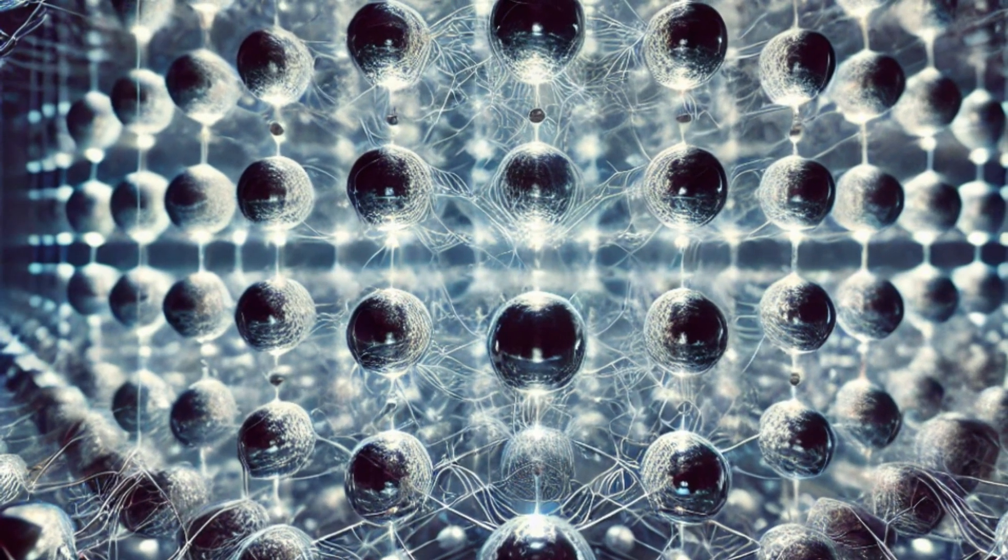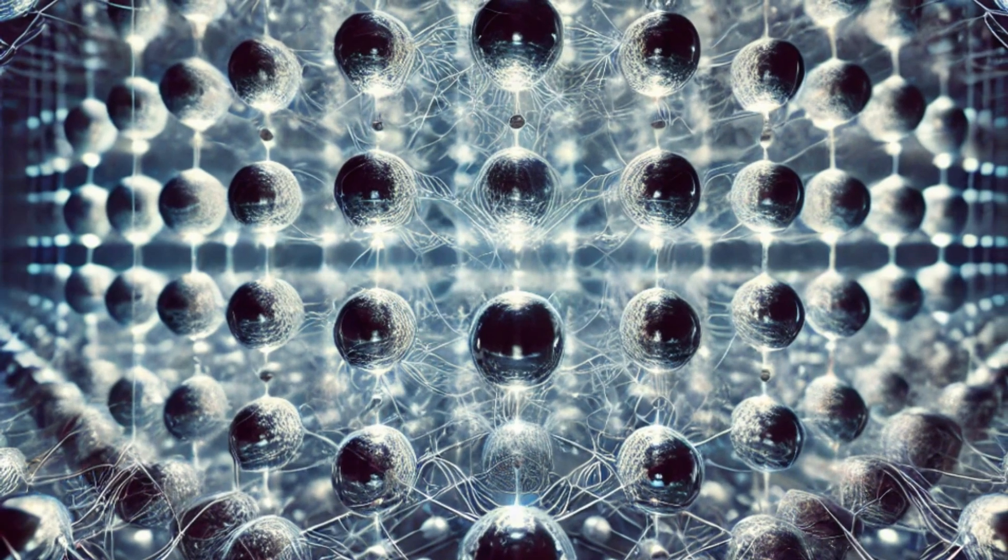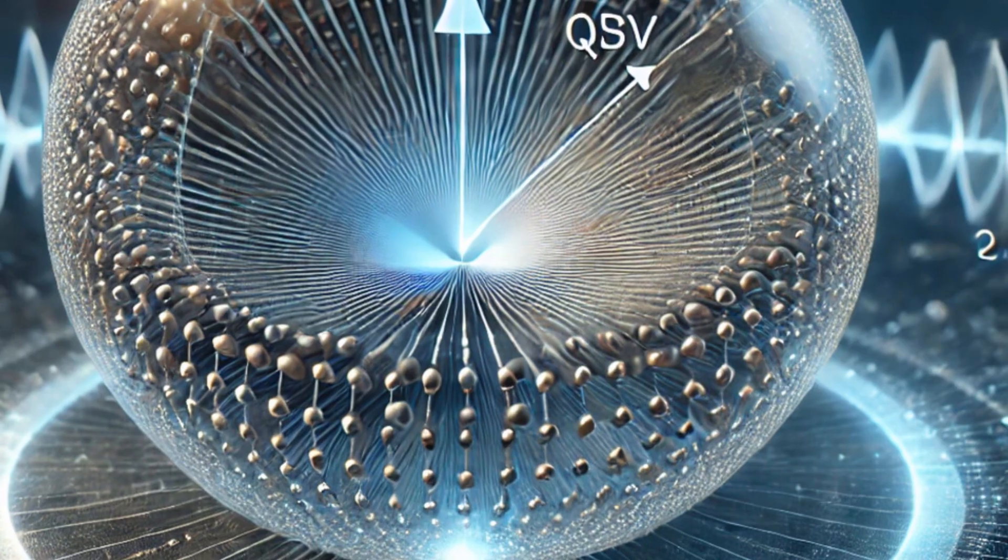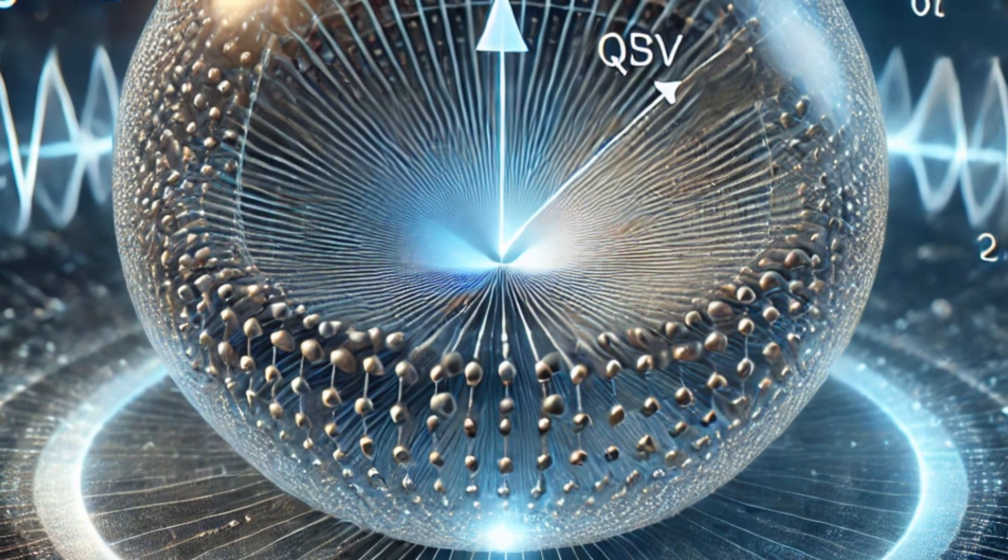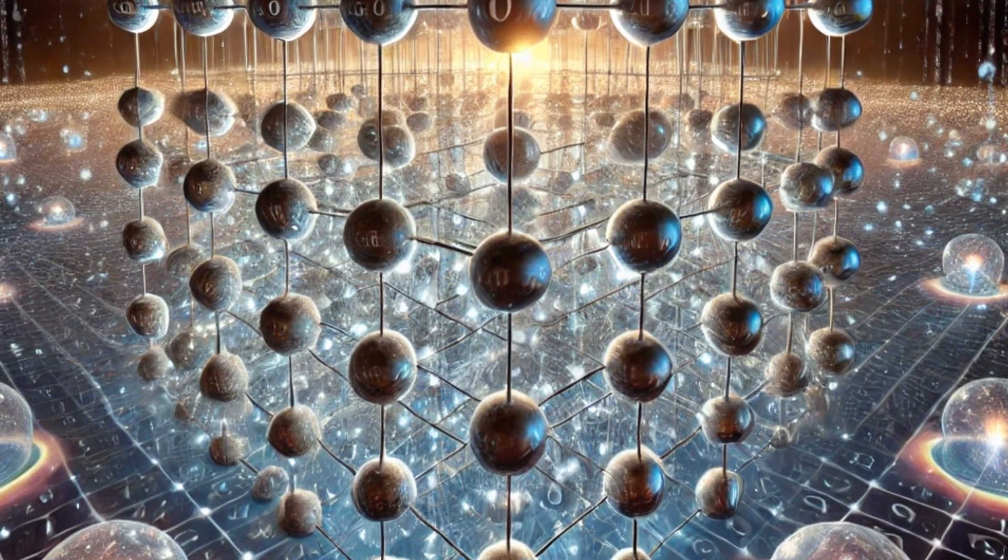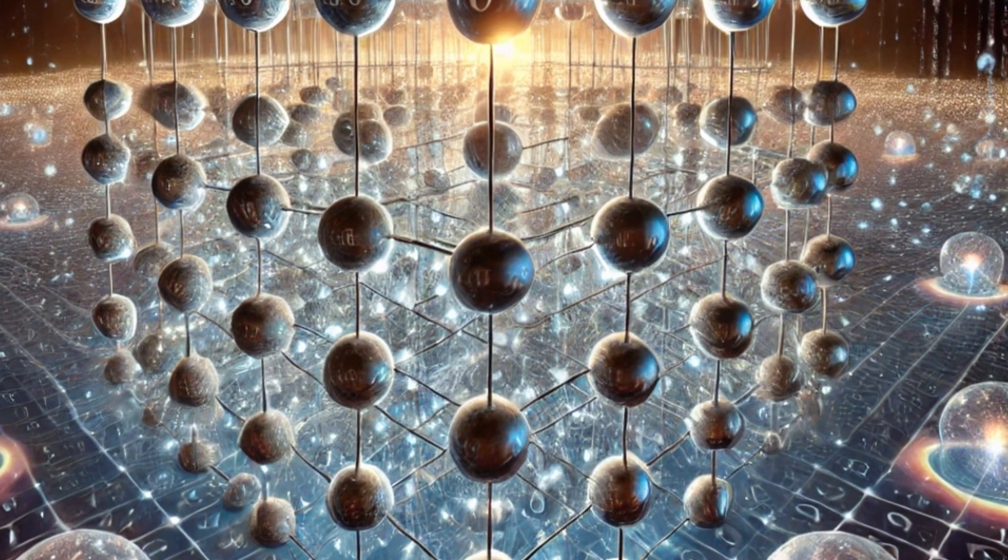Imagine zooming out from one glowing ball to see a whole network of them, all connected by glowing lines. Each ball's arrow spins in harmony with the others, creating ripples across the entire grid. These ripples form the patterns that create the hologram we perceive as space and time.